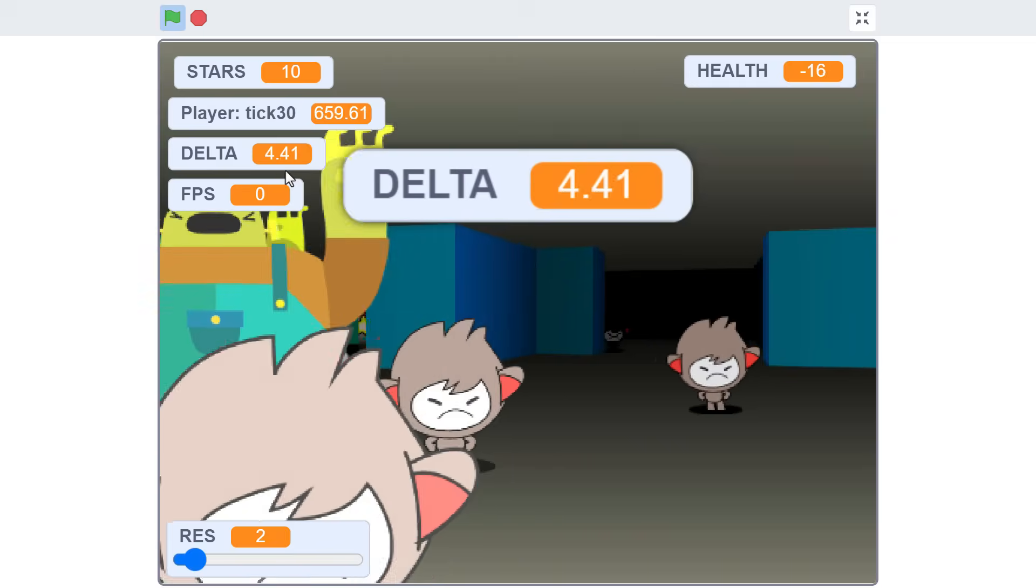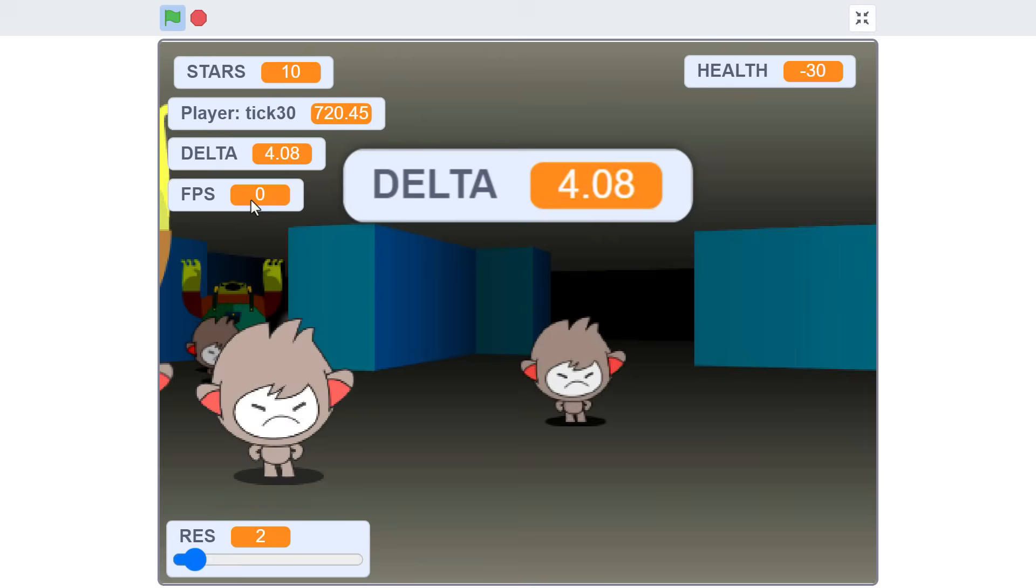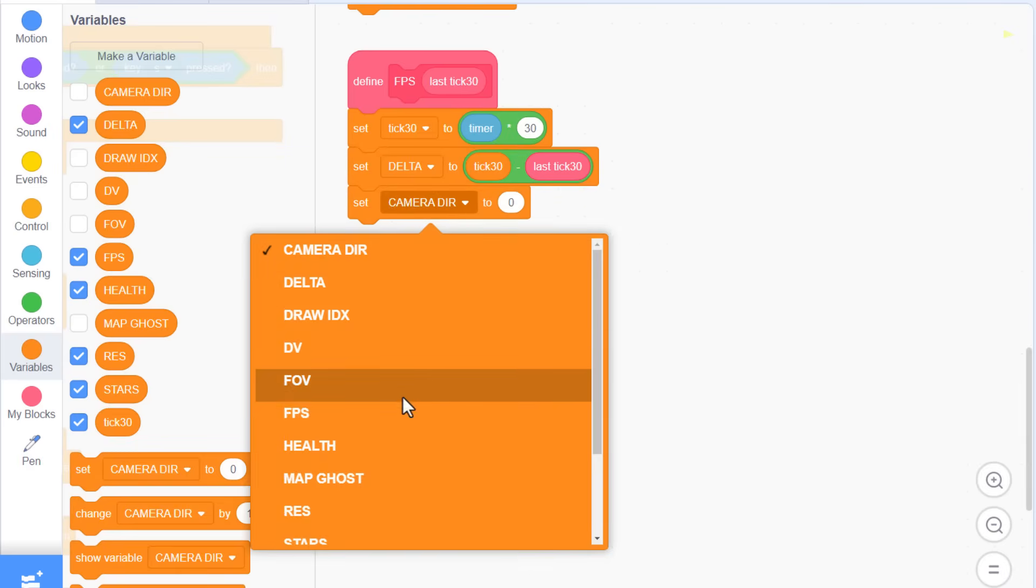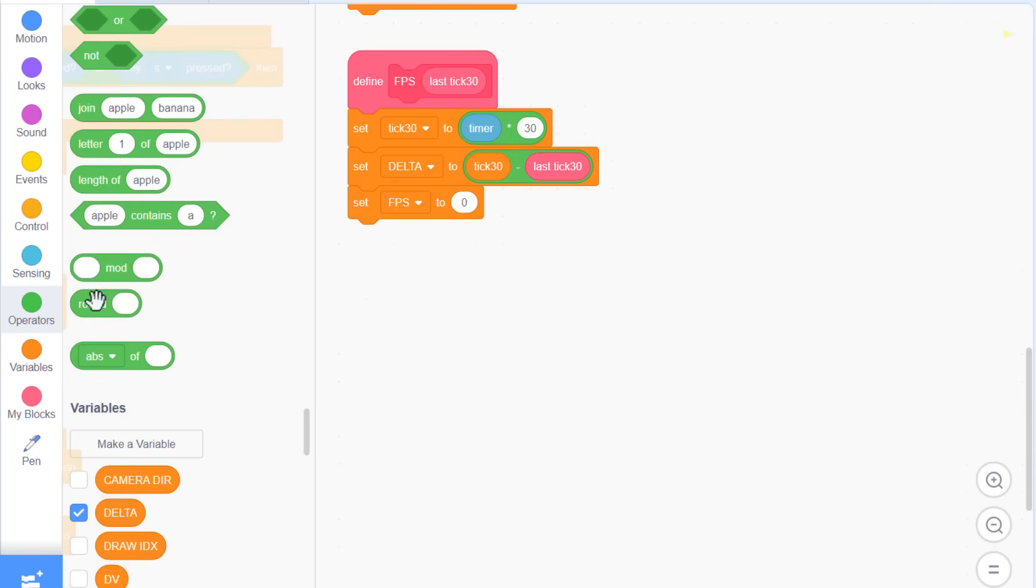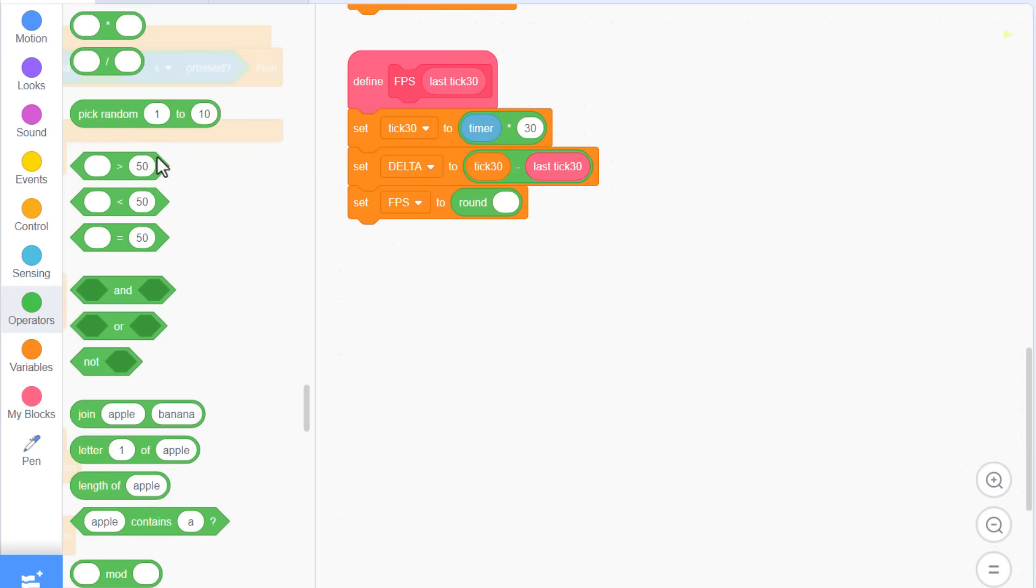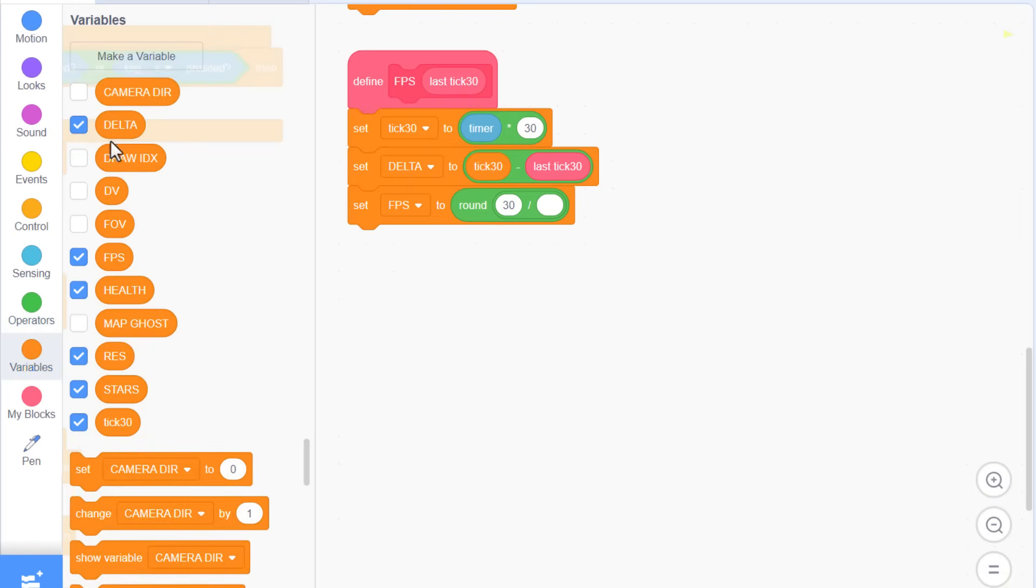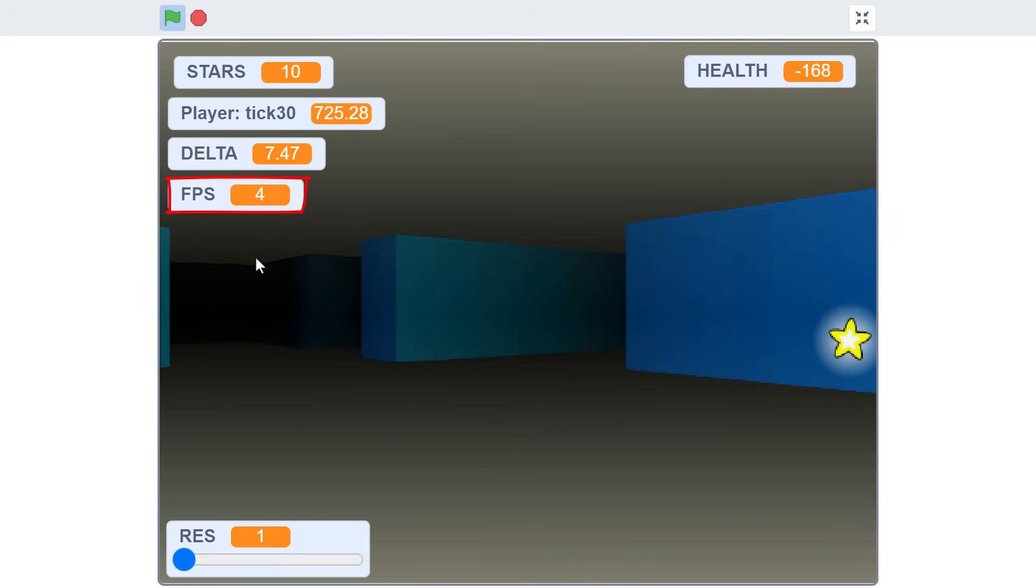Now, it's just a simple step to convert this into 2 frames per second. We set FPS to the round of dividing 30 by delta. Sweet. And there, now we have a way of measuring our game's speed.